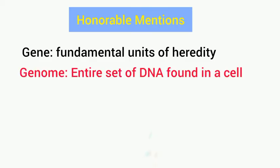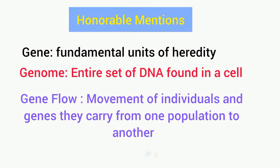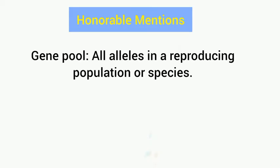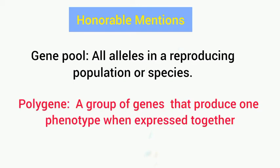Some honorable mentions: gene is the fundamental unit of heredity; genome is the entire set of DNA found in a cell; gene flow is the movement of individuals and the genes they carry from one population to another; gene pool refers to all alleles in a reproducing population or species; and polygene is a group of genes that produce one phenotype when expressed together.